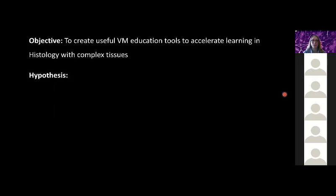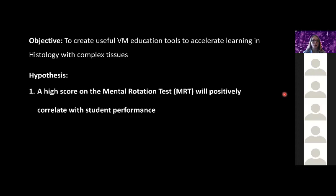In our study we have two hypotheses. Our first one is that a high score on the mental rotation test or MRT will positively correlate with student performance. Mental rotation is just how well can you rotate or manipulate an object in your mind. We're doing this because if you have a higher MRT you're better at anatomy, and also men on average have a higher MRT than women. We have defined student performance as accuracy—how many questions they get correct—and also how efficient they are at identifying a slide.